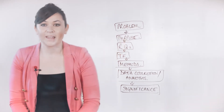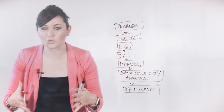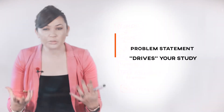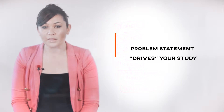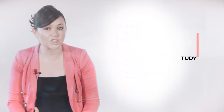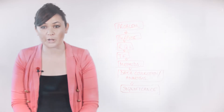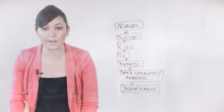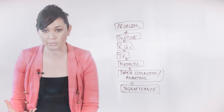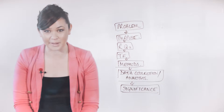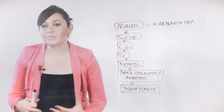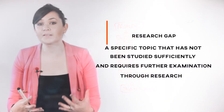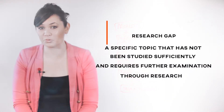The problem statement is essentially the centerpiece of your study, or the engine that drives the train forward. Although this statement is usually fairly brief — at about 350 words or so — the information contained within it defines the direction the entire study will follow. Your problem statement must define the exact nature of the problem as derived through a review of all the current research in the peer-reviewed literature of your topic. The problem statement must also describe the research gap — a specific topic that has not been studied sufficiently and requires further examination through research.